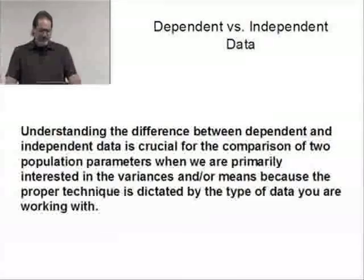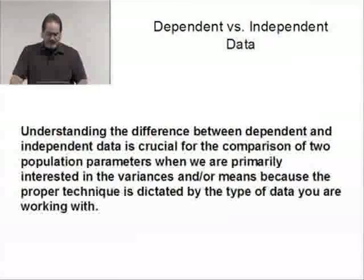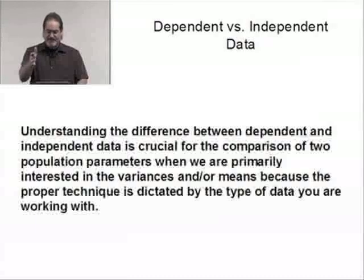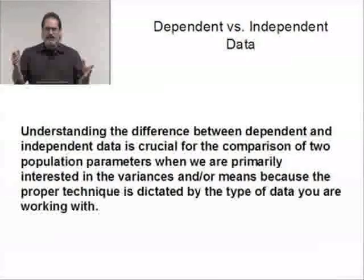Understanding the difference between dependent and independent data is really crucial for the comparison of two population parameters, particularly when we're interested in the variances, the standard deviations, the means, and the medians. That's extremely important because we use that as a basis to determine how we're going to go about the whole thing. And then in the next video, we're going to take a look at an example of some data actually making a comparison.